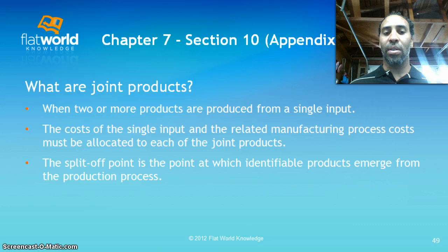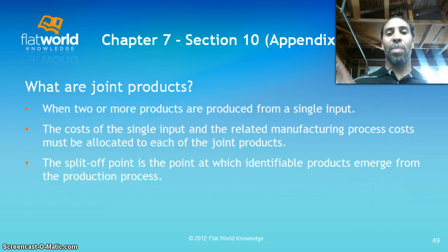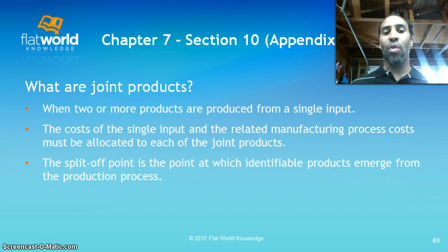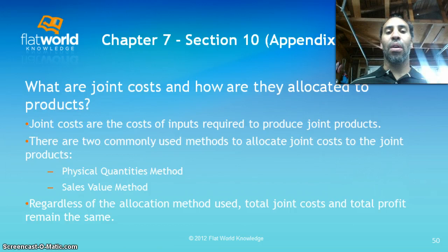The split-off point is when the wood comes down the line, gets treated, and then diverges — going off to become a skateboard or off to become a desk. The split-off point is the point at which the identical input products emerge from the production process and become distinct products, such as a desk or a skateboard.